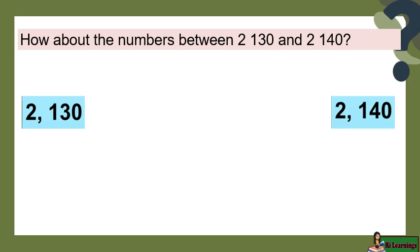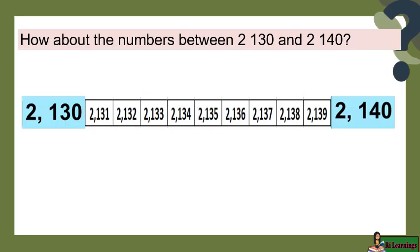How about the numbers between 2,130 and 2,140? 2,131, 2,132, 2,133, 2,134, 2,135, 2,136, 2,137, 2,138, and 2,139.